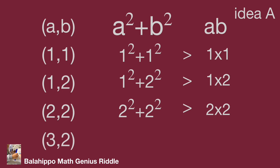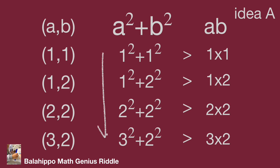Trying (a, b) = (3, 2): a squared plus b squared equals 9 plus 4 equals 13, and ab equals 6. Again, a squared plus b squared is larger than ab — not equal. For all positive integer values of a and b, a squared plus b squared is larger than a times b, and as the numbers increase, a squared plus b squared becomes much larger than ab. Therefore, a squared plus b squared is always not equal to ab, meaning there are no positive integer solutions.